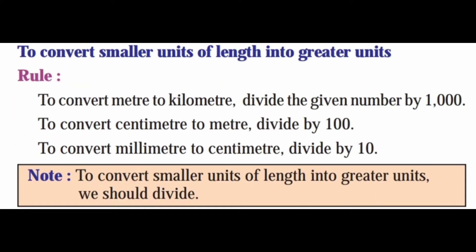To convert smaller units of length into greater units, the rule is: to convert meter to kilometer, divide by 1000; to convert centimeter to meter, divide by 100; to convert millimeter to centimeter, divide by 10. Note: to convert smaller units of length into greater units, we have to divide.